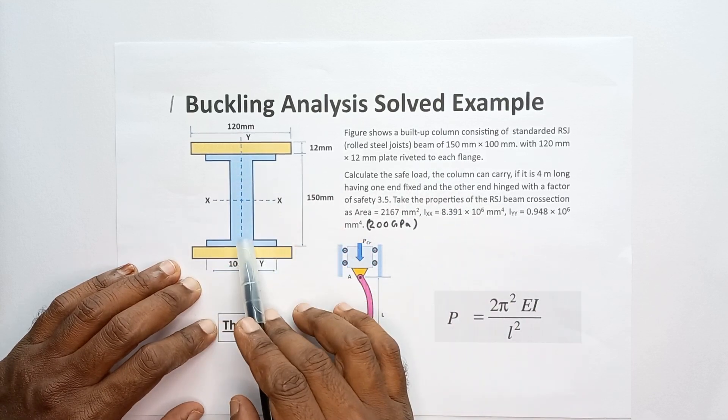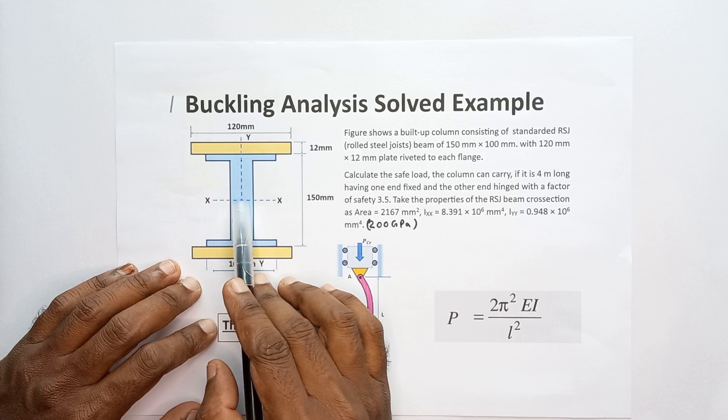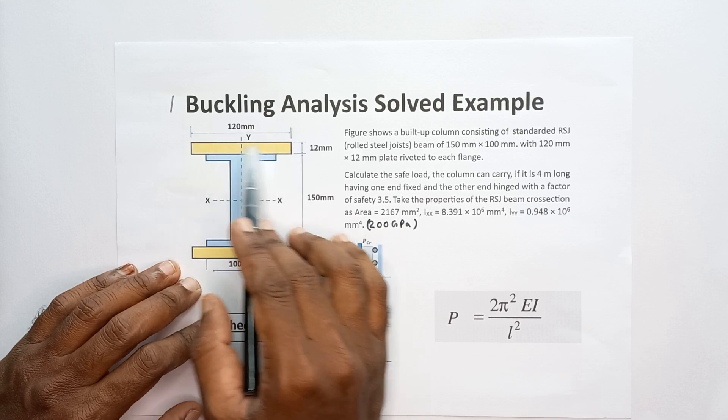This is the cross section. This is the rolled steel joist beam, then these are the riveted plates.